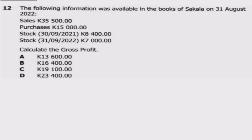Question 12 is as follows. The following information was available in the books of Sakala on 31 August 2022: sales 35,500 kwacha, purchases 15,000 kwacha, opening stock — which is on 30th September 2021 — was 8,400 kwacha, and closing stock — which was on 31st August 2022 — is 7,000 kwacha.